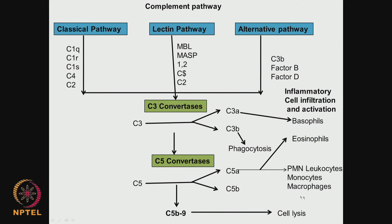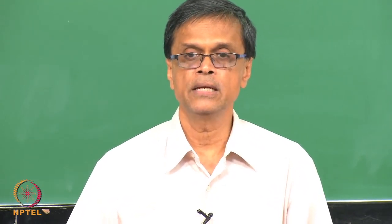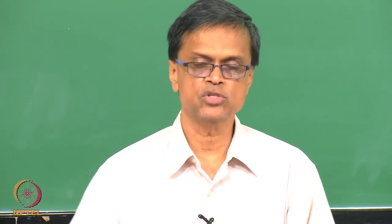Different types of complements end up causing cell lysis, inflammation, and cell infiltration — we do not want complement activation when a biomaterial is placed. The main consequences of complement activation are: first, opsonization of pathogens — the complement proteins identify what the pathogens are so that the host defense can go and kill them.